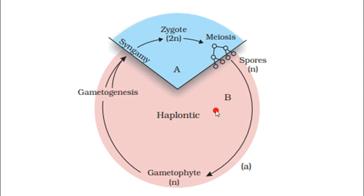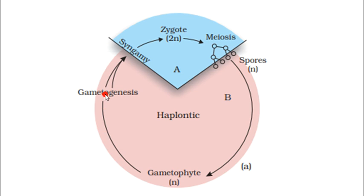In the haplontic cycle diagram you can see the pink-colored portion is larger — that is the haplontic (n) part — while the diplontic portion is small. Spores (n) form the gametophyte, gametogenesis occurs to form a zygote (2n), and haplontic always refers to the 1n dominant phase.